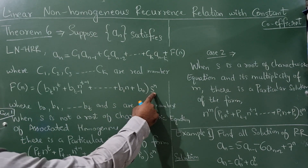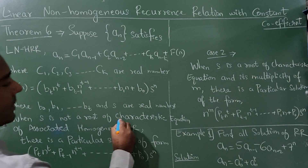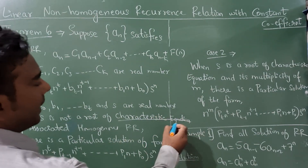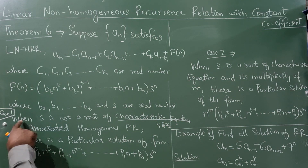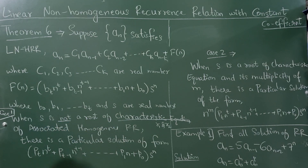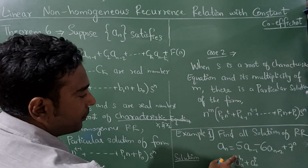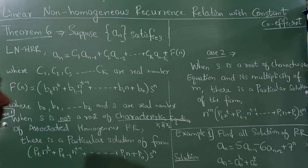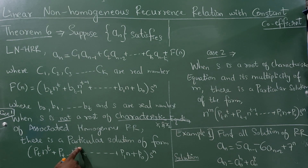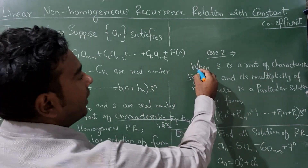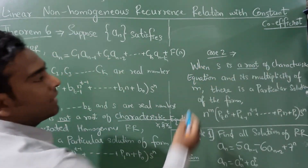Case 1: when s is not a root of the characteristic equation — those characteristic roots are r1 and r2 — when s is not a root of the characteristic equation of the associated homogeneous recurrence relation, there is a particular solution of the form: pt·n^t + p(t-1)·n^(t-1) + ... + p0 · s^n.